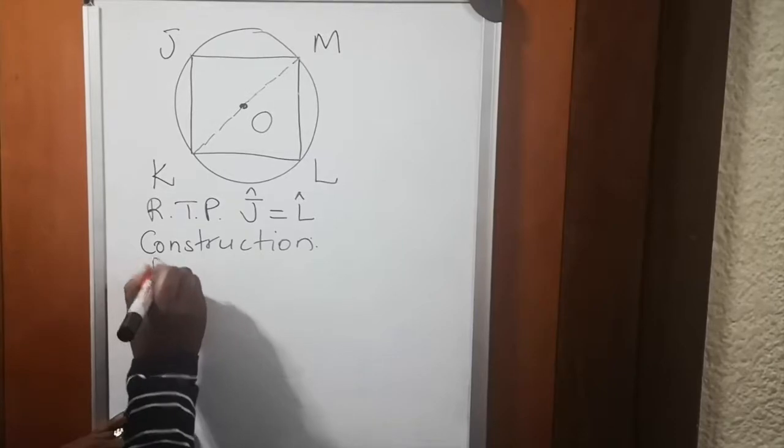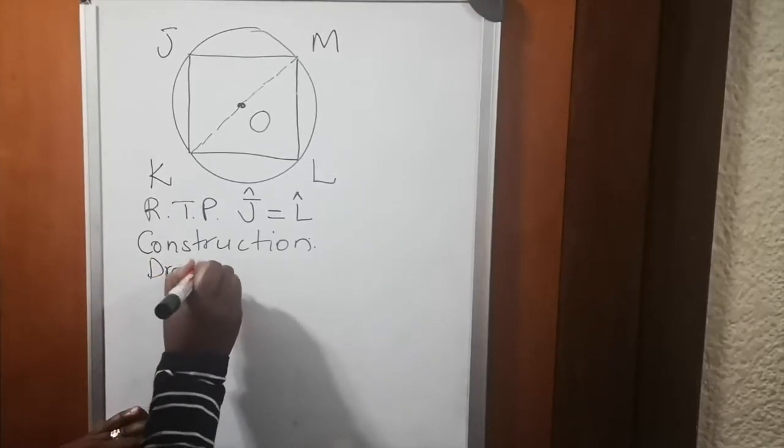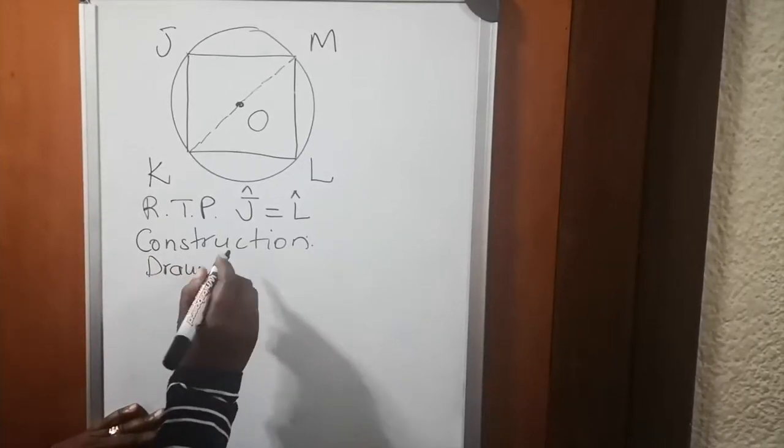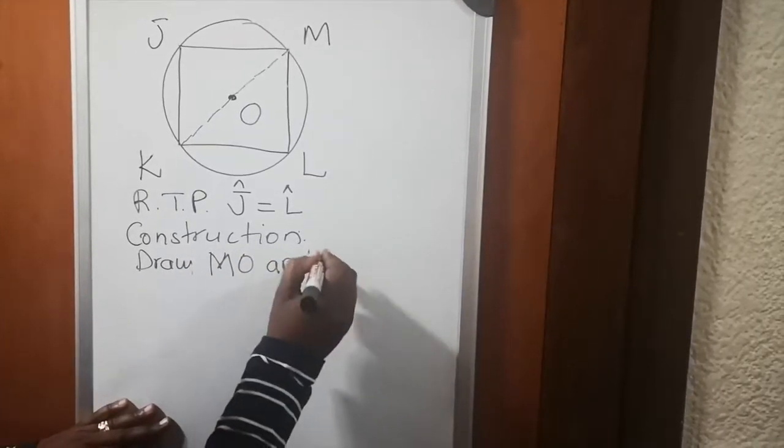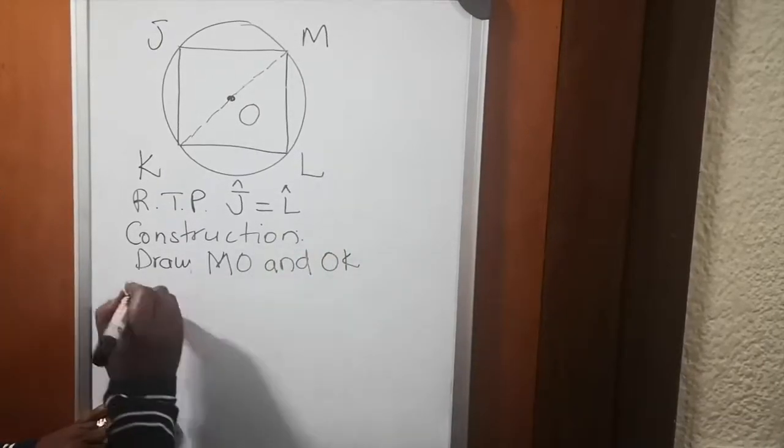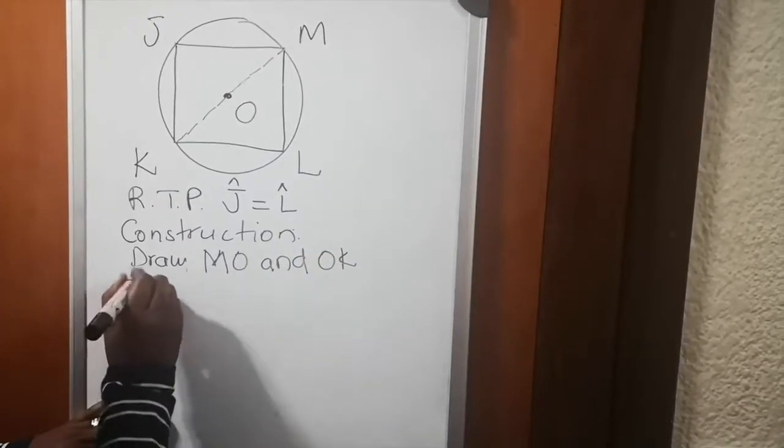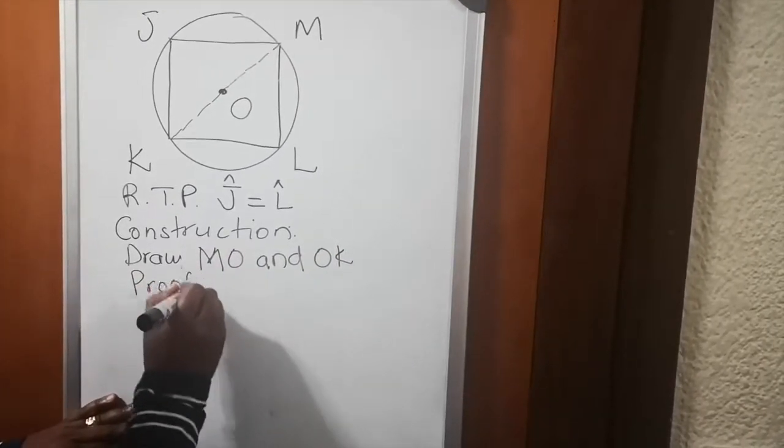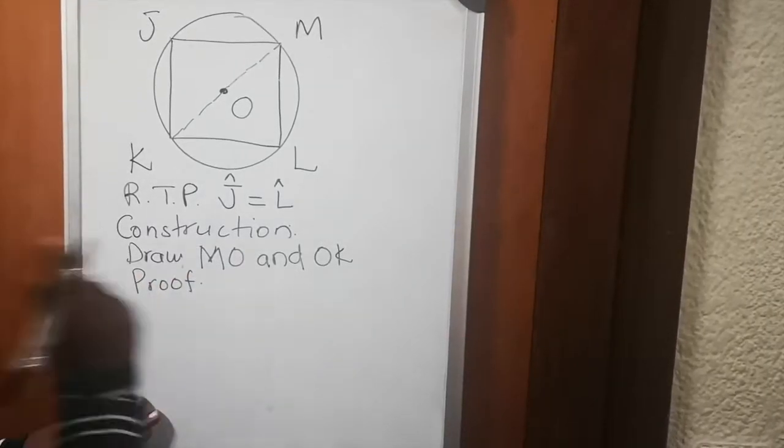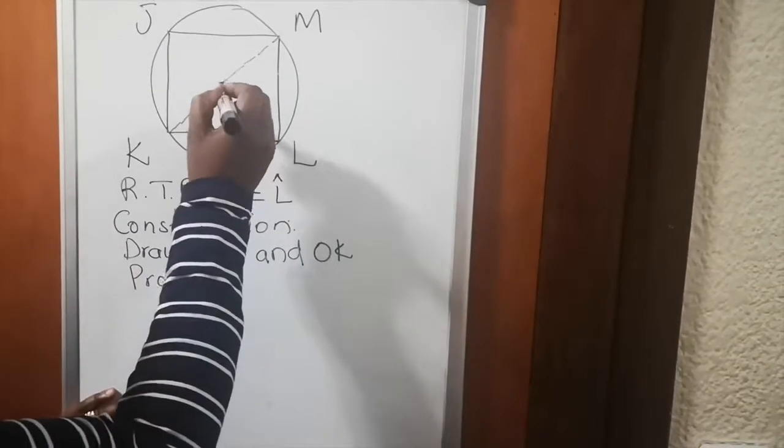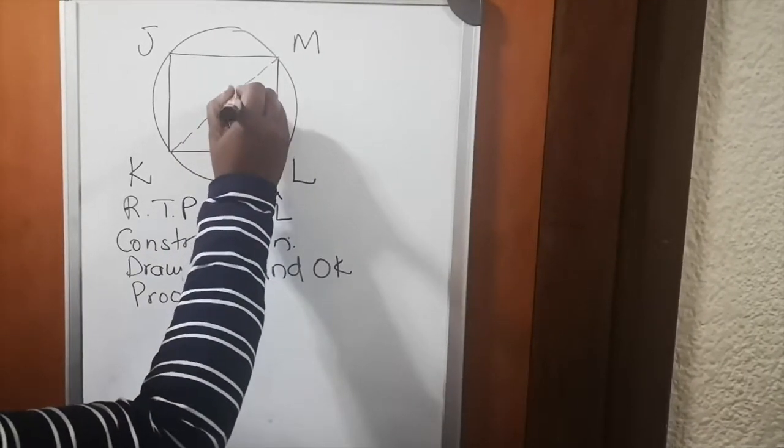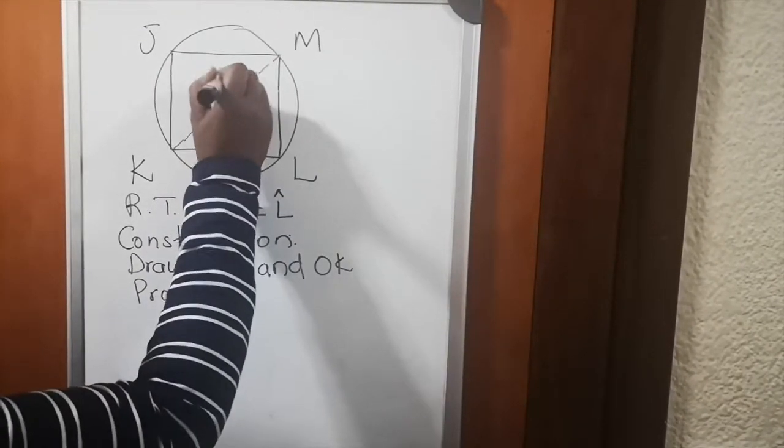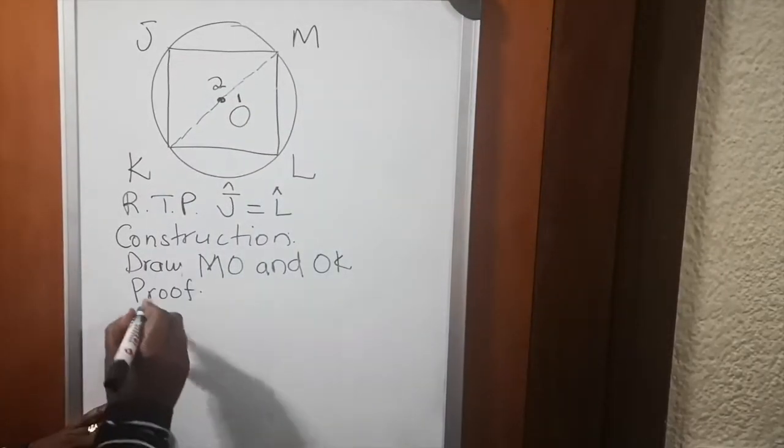You want to join line MO and line OK. So I'm going to draw MO and OK. Then you can start with the proof. Before we start with the proof, to make things easier for you, there are two angle O's. Call this one O1 and that one O2. Then we start with the proof.